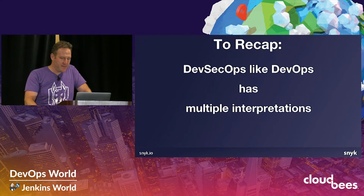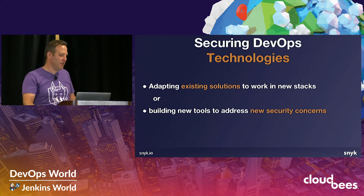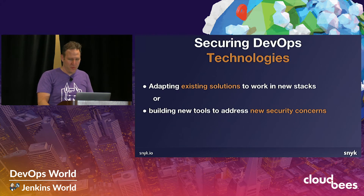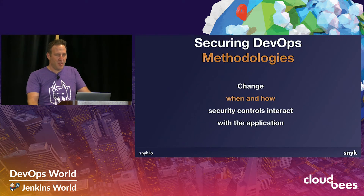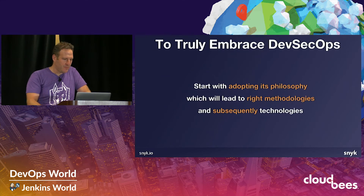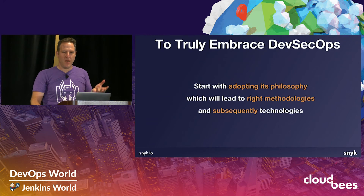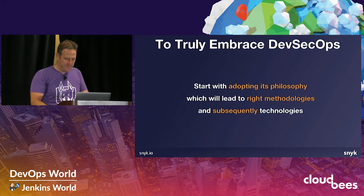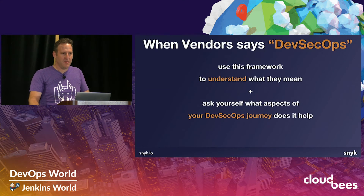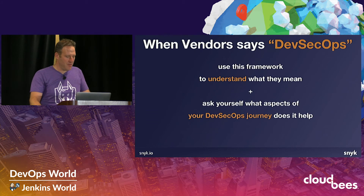To recap: DevSecOps, like DevOps, has multiple interpretations. Securing DevOps for technologies means either adapting existing solutions to work with new stacks or building new tools to support new security concerns. Securing DevOps methodologies means changing when and how you introduce security controls to impact your application. Adapting to DevOps shared ownership means getting devs and ops to own more of the security responsibility and activity. My belief is that to truly embrace DevSecOps, you need to start with adopting the philosophy, which will lead you to the right methodologies, which will eventually get you using the appropriate technologies. When vendors say they support DevSecOps, you can use this framework to better understand what exactly that means and ask where it helps you in your own DevSecOps journey.